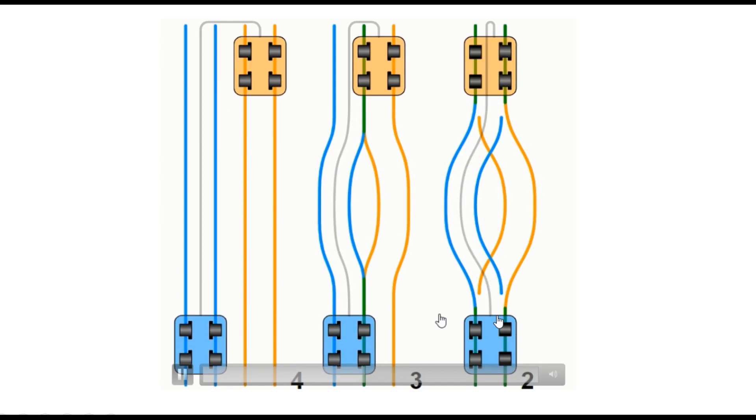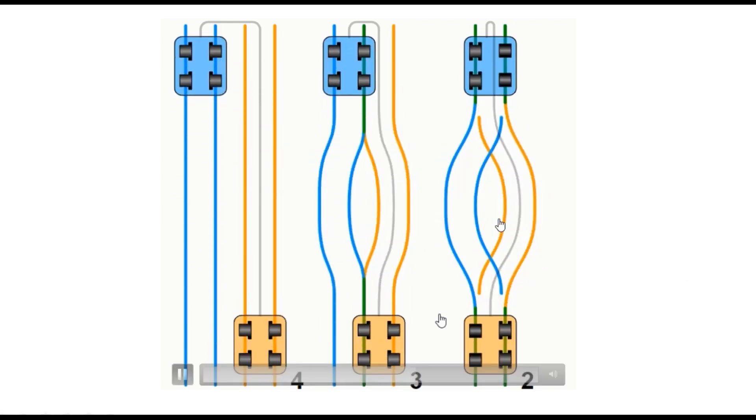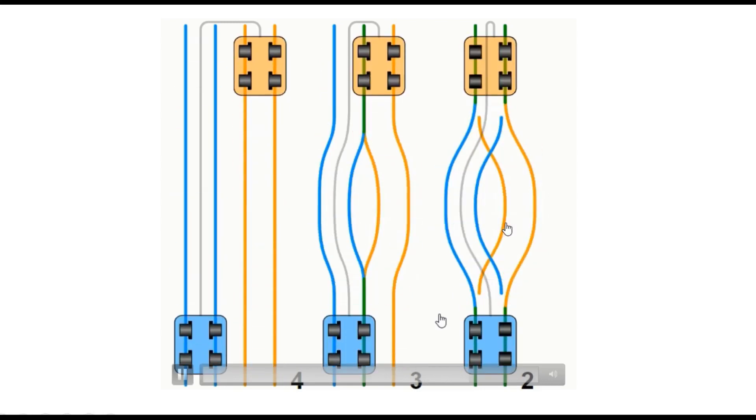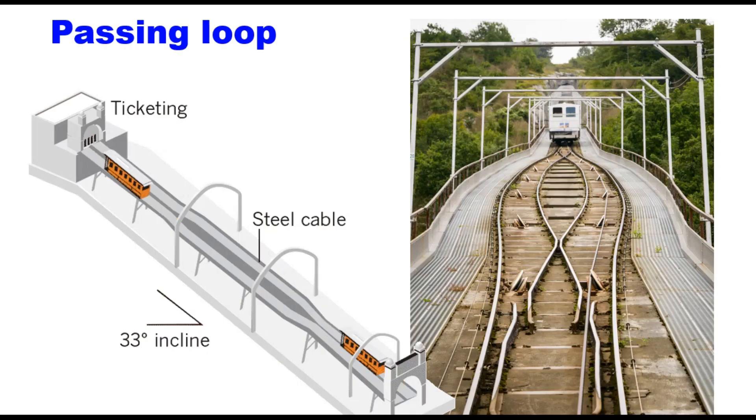In this case, the incline has two cars that ride on the same single line or you can say single mile long track. When the cars come close together, the track splits into two as a passing loop for both cars to pass one another. This single track passing loop system is used in funicular railways across the world.